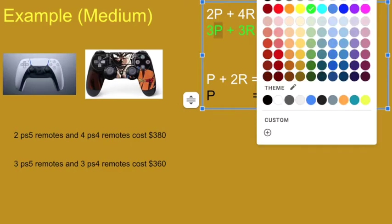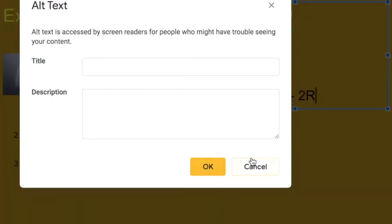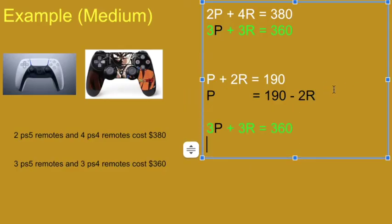Instead of P, I'll replace it with 190 dollars minus two R's and then solve this algebraically. 3 times 190 is 570. 570 minus six R's plus three R's equals 360.